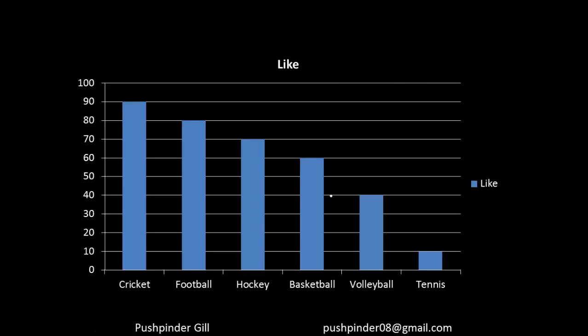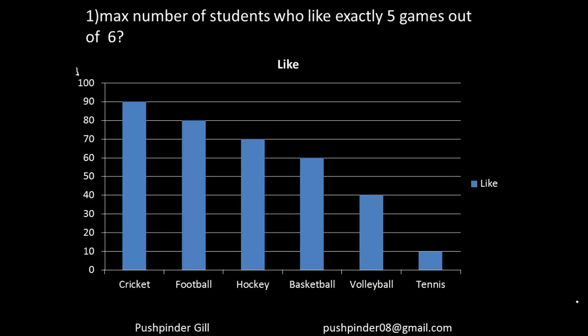What you have to do is make a chart. You don't have to make a very good-looking chart — you can just draw a few lines and label: cricket, football, hockey, basketball, volleyball and tennis. 90 people like cricket, 80 like football, and so on, with a maximum of 100 people total. The question is asking: what is the maximum number of students who like exactly 5 out of 6 games?